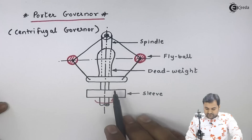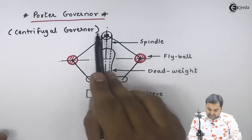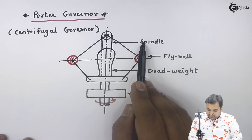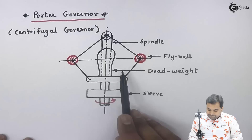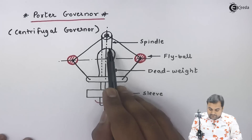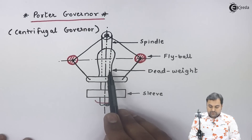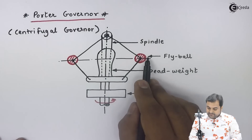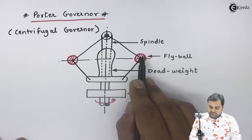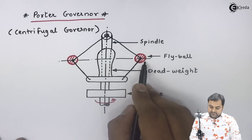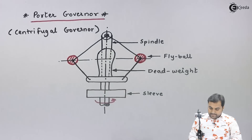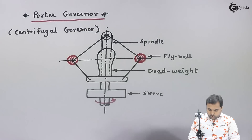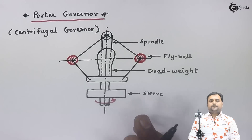Now let us see how this governor works, as we can see in this diagram. The Porter governor has some parts. Here we have a spindle which would be rotating. Then there is a dead weight kept — because of this dead weight it is called a dead weight governor or loaded governor. There are fly balls, which we can see here in red color, having some mass. And then there is a sleeve attached.